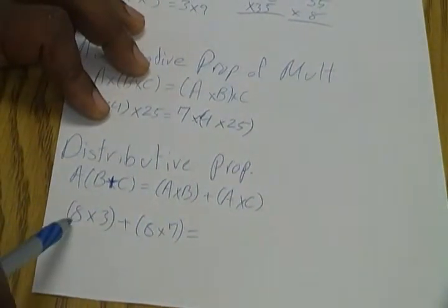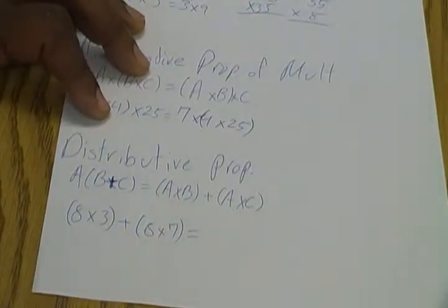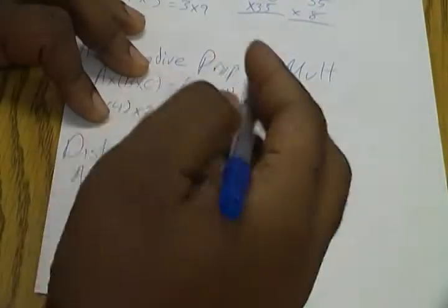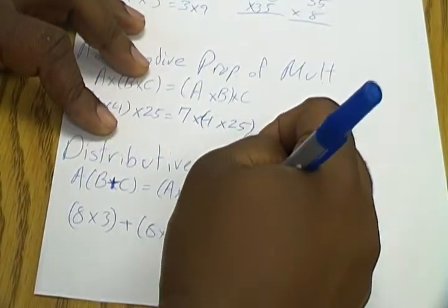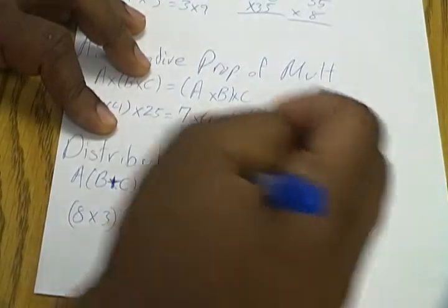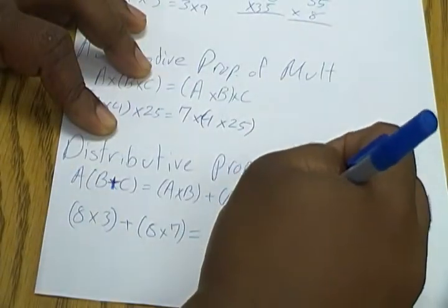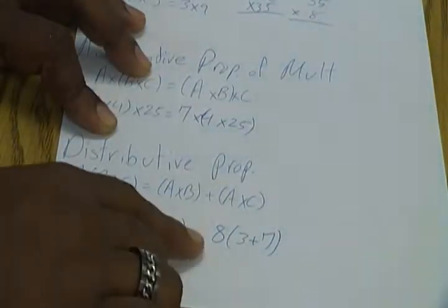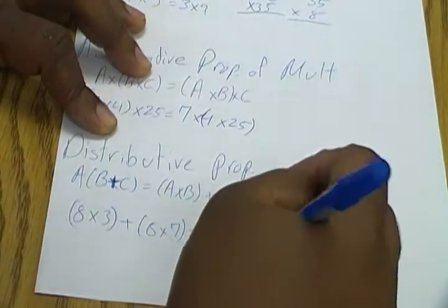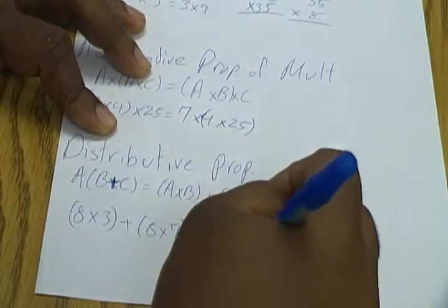Now if I want to put this into practical use, let's say for instance we have 8 times 3 plus 8 times 7. Now 8 is our common number here, so it's 8 times these two numbers. So instead of doing those separately—8 times 3 is 24, 8 times 7 is 56—let's put them together. So we're going to do 8 times, and then we're going to add 3 and 7. We know 3 plus 7 equals 10, and then we multiply it times 8, which gives us 80.